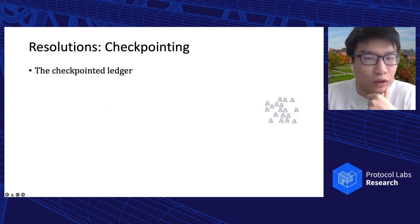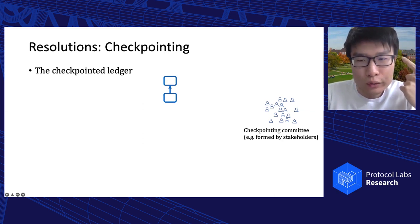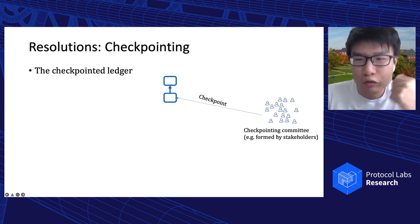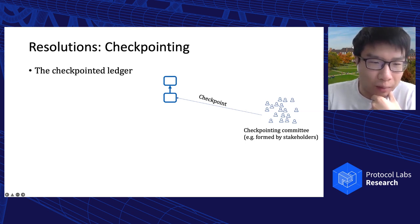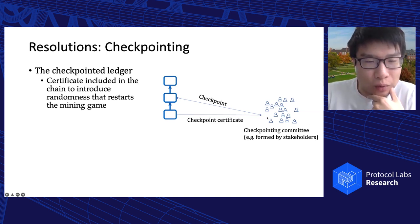In the literature, the checkpointed ledger was proposed to address the 51% attack on PoW blockchains. It uses a committee to secure a PoW ledger by regularly issuing checkpoints. The checkpointing committee is chosen randomly from the pool of stakeholders. The safety of the checkpointed ledger is guaranteed by the safety of the checkpointing protocol, usually a BFT protocol running by the committee.